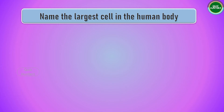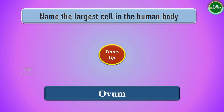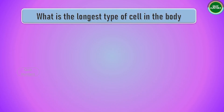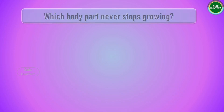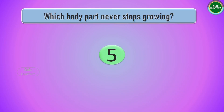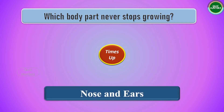Question number three: name the largest cell in the human body. The answer is the ovum. Question number four: what is the longest type of cell in the body? The answer is the nerve cell. Question number five: which body parts never stop growing? The answer is the nose and ears.